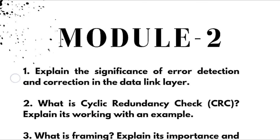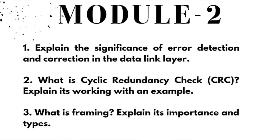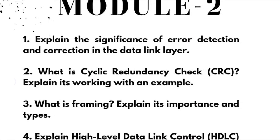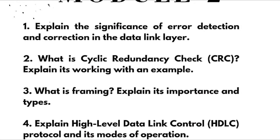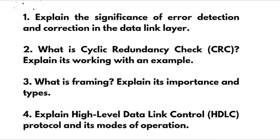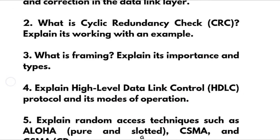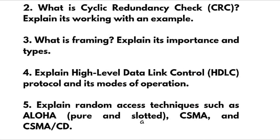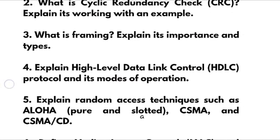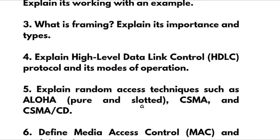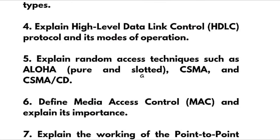Module 2 is a combination of theoretical and numerical portions. For numericals, refer to previous year question papers of the 2018 and 2021 schemes. Theoretical portions include: explain the significance of error detection and correction in the data link layer; what is cyclic redundancy check (CRC) — explain its working with an example; what is framing — explain its importance and types; explain high-level data link control (HDLC) protocol and its modes of operation.